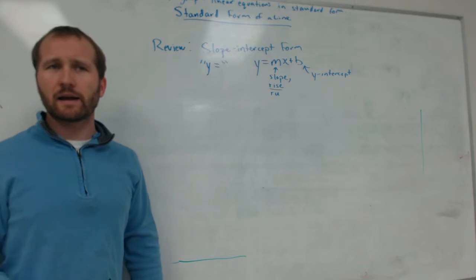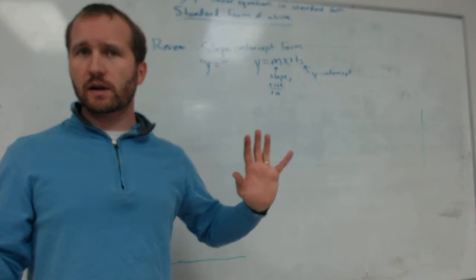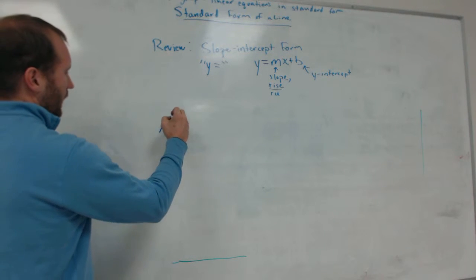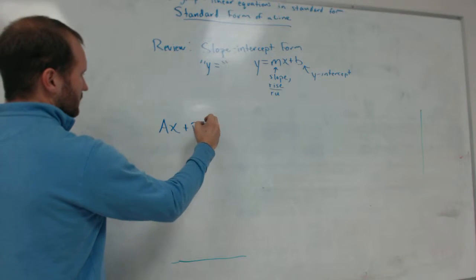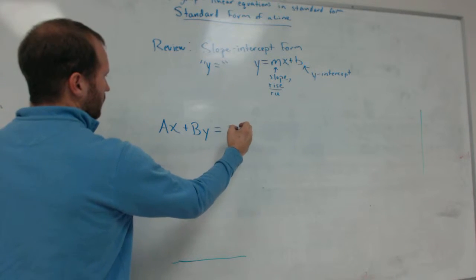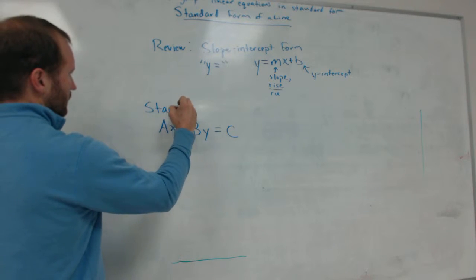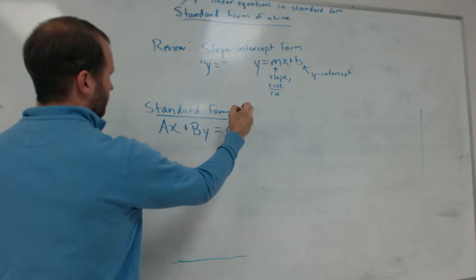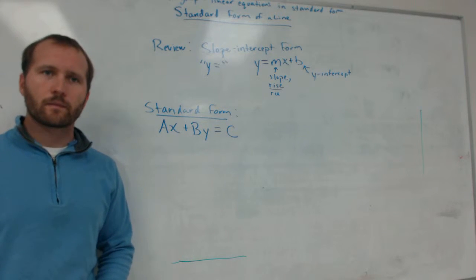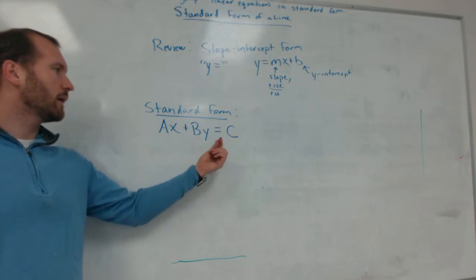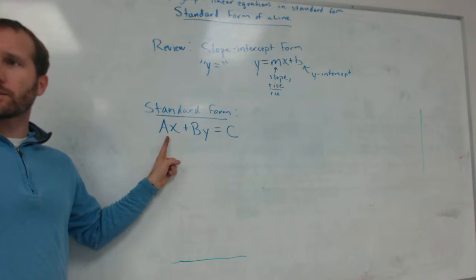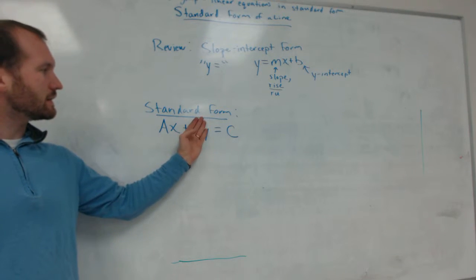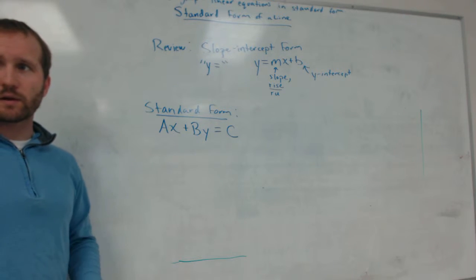And so standard form of a line is the form that all linear equations can always be written in. All linear equations can be written in this form. Now, sometimes a might be 0, so you might not see the x. Or b might be 0, so you might not see the y. But you could write every equation this way.